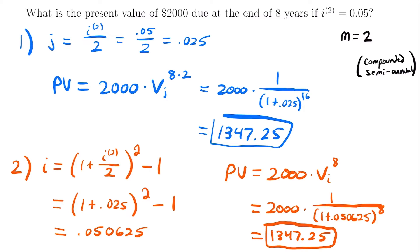No matter which way you do this problem — whether you find the effective semi-annual rate or the annual effective rate — you'll get the same present value. The big thing to remember is to adjust your time. If we hadn't multiplied by 2 in the first method, we would have gotten a completely different answer. This example shows how we convert a nominal interest rate into two different types of rates to solve a problem in two different ways.